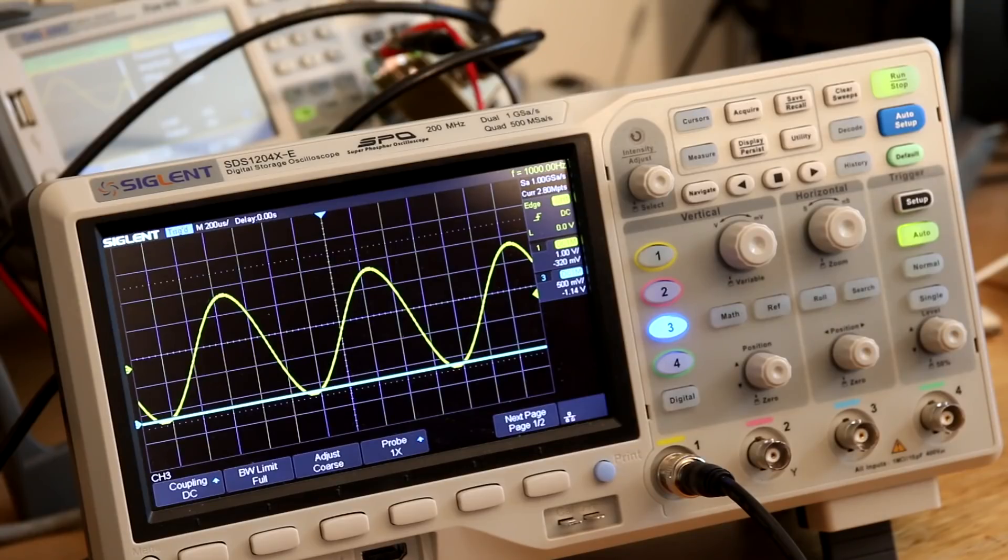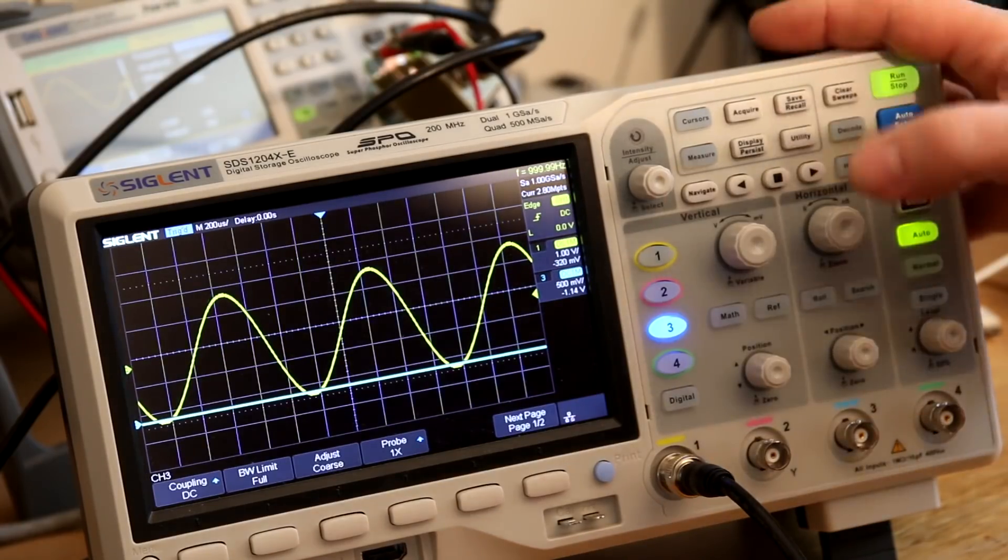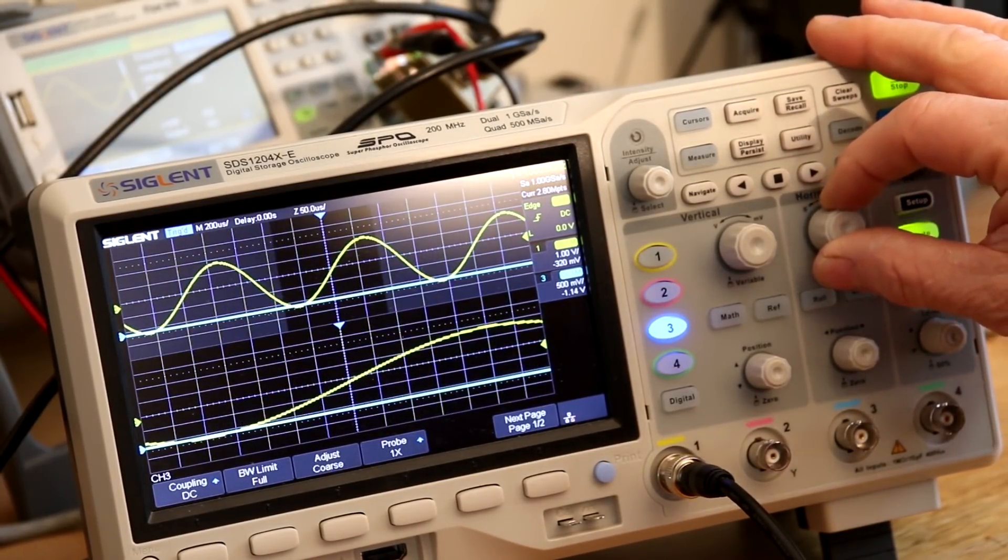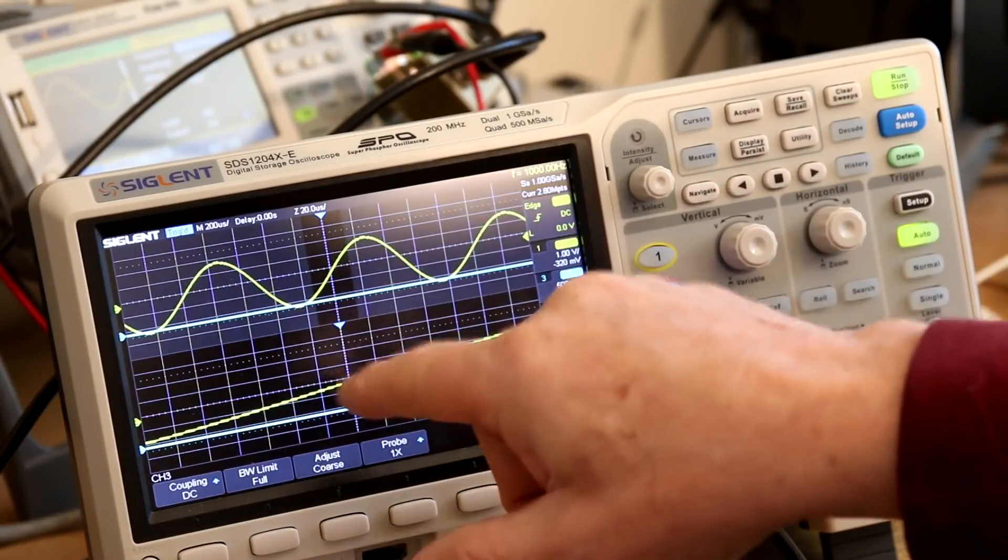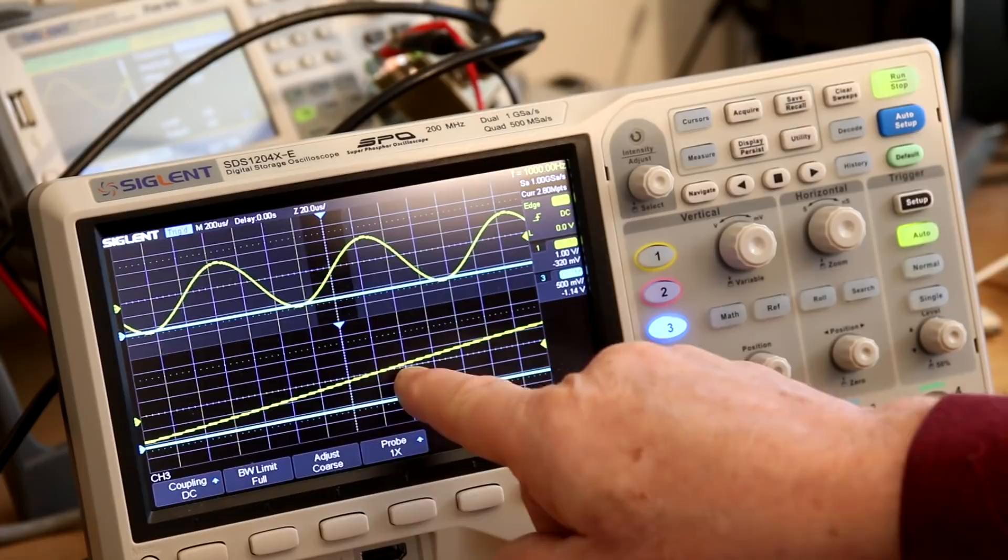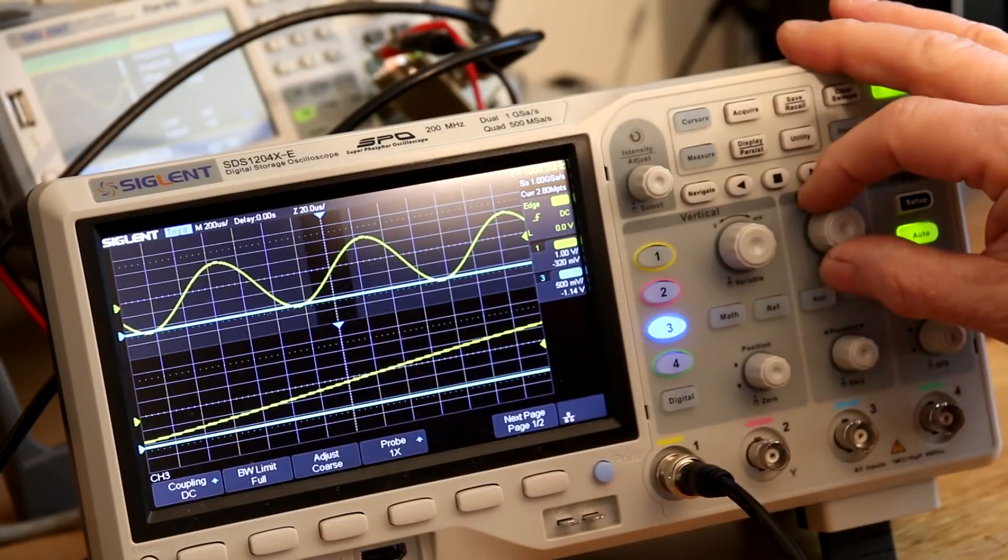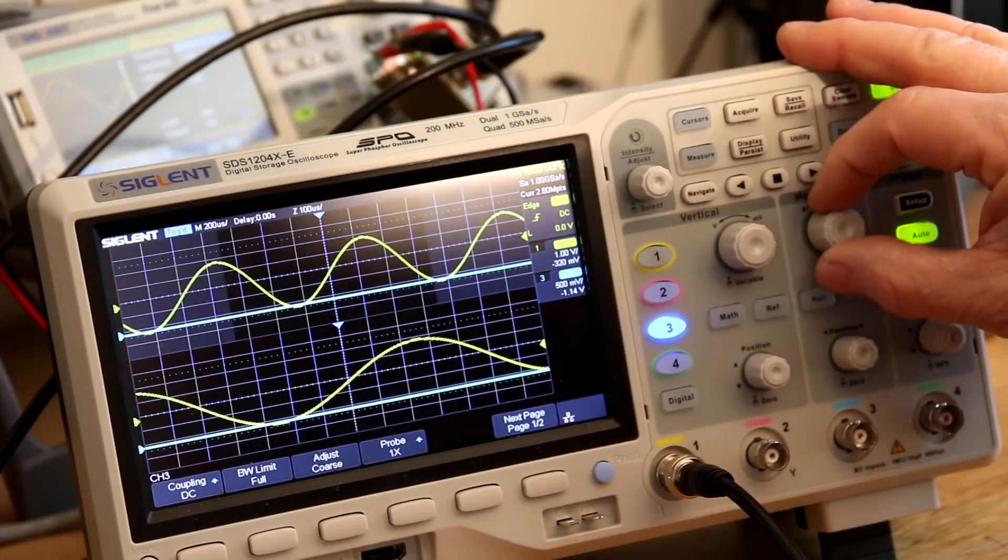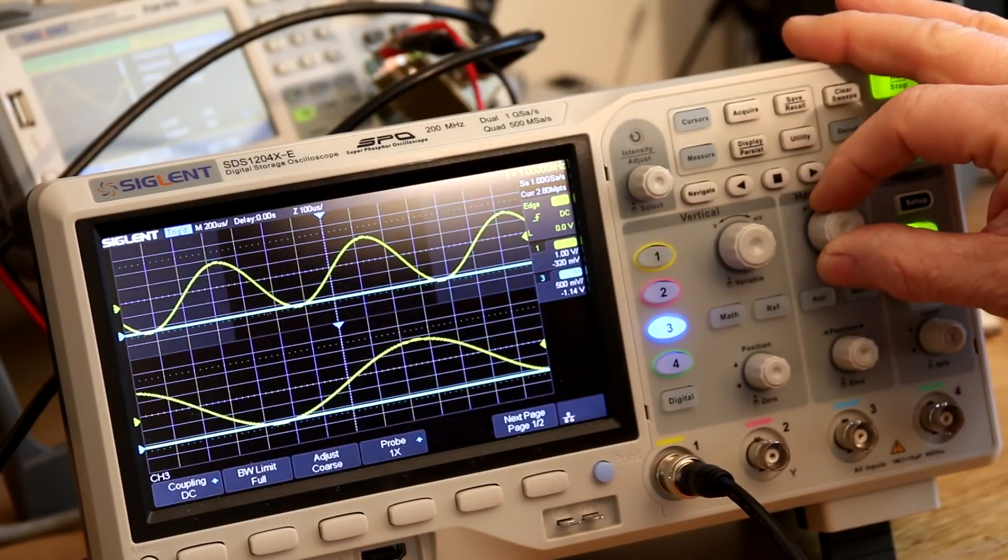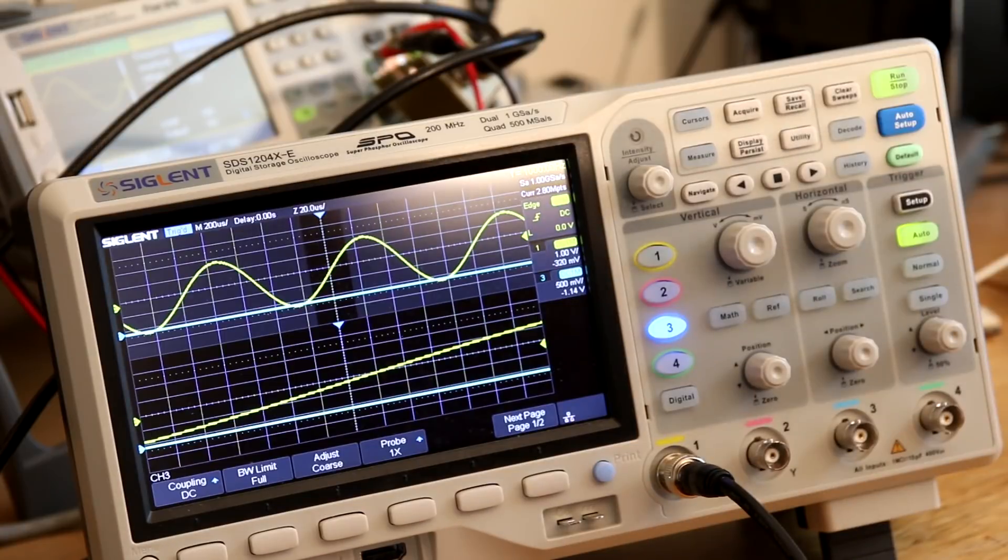The scope will capture 400,000 waveforms per second. It has a 14 mega point memory. One feature of any decent scope is this zoom feature. I press in the horizontal control and you see the display kind of grays out there. That little ungrayed out part there is then blown up on the bottom here. So you can see the sine wave in great detail there. If I zoom out, you see more of the sine wave. I wouldn't buy a scope without that feature.